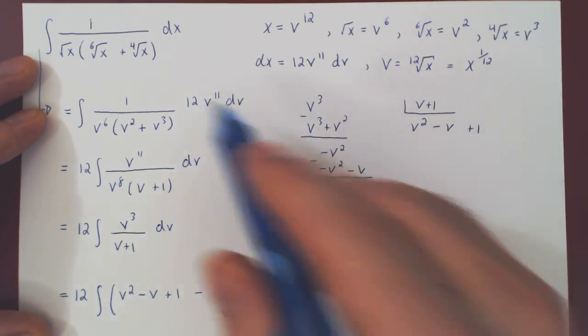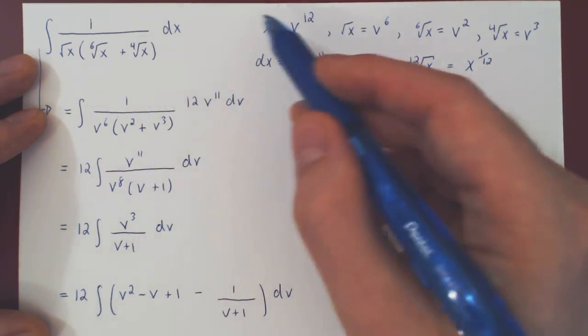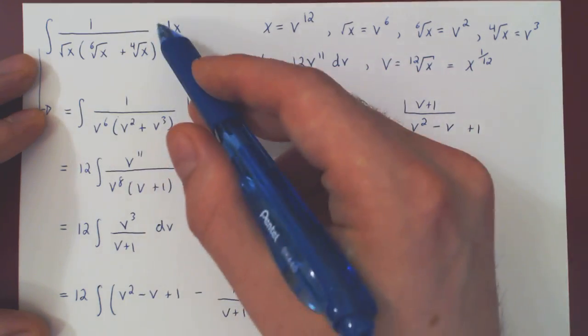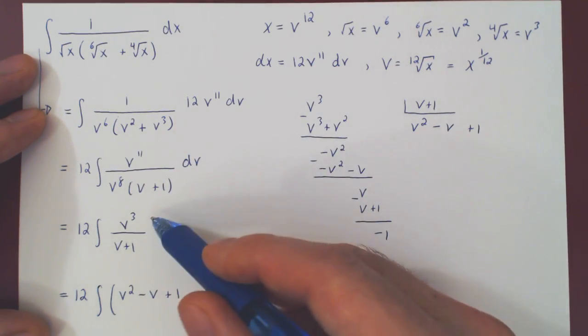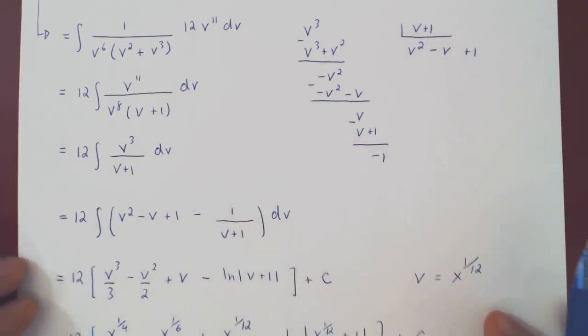So we had this very unpleasant-looking integral, but we recognized that by choosing a proper power of v and letting that be x, we could transform the integral into one of a rational function, which we can of course evaluate systematically using our method of partial fraction.